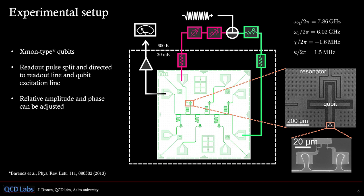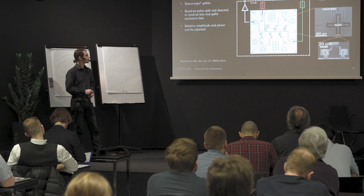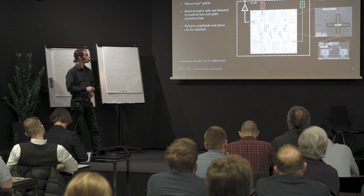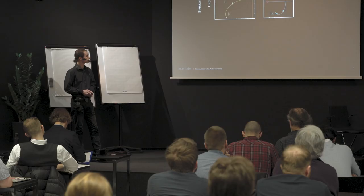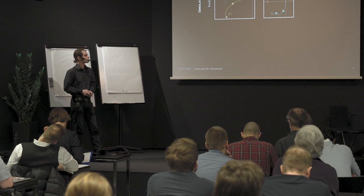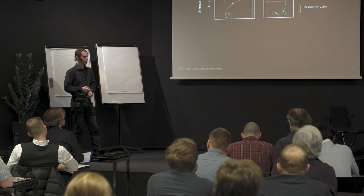Here is our experimental setup where we tested this. We used superconducting transmon qubits of the X-mon type. Here you can see the schematic where we applied these two microwave pulses to the one qubit that we wanted to measure. Here are the results. We first did some simulations. On the left we have the typical measurement scheme and on the right we have our multi-channel scheme in comparison. These curves represent the trajectories of these distributions I showed earlier, and the arrows represent the two microwave tones that we applied.